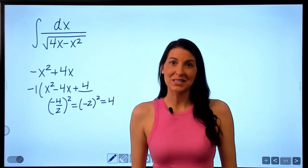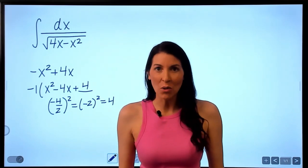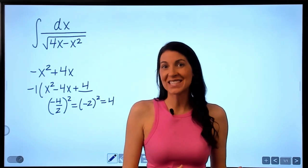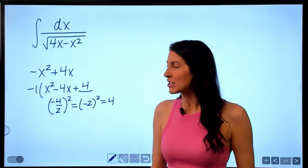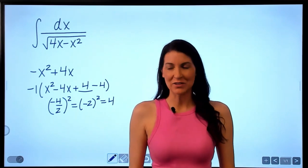So positive 4 is what completes the square. Now I can't just go into a problem and decide to add 4. I need to undo what I just did so I can return it back to its original form. So I then need to subtract 4 to undo the plus 4.